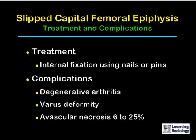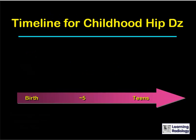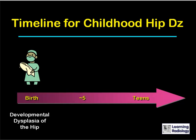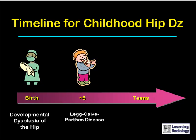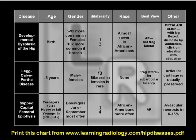Treatment for SCFE is internal fixation using nails or pins. Complications include degenerative arthritis, varus deformity, or avascular necrosis occurring in 6 to 25% of cases. To review the timeline for childhood hip diseases: developmental dysplasia of the hip occurs at birth, Legg-Calvé-Perthes disease around 5 years of age, and slipped capital femoral epiphysis is a disease of teenagers. A downloadable chart at learningradiology.com/hipdiseases.pdf demonstrates the parameters that differentiate these three conditions.